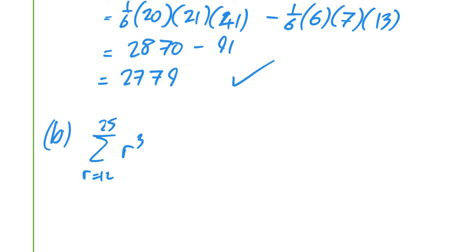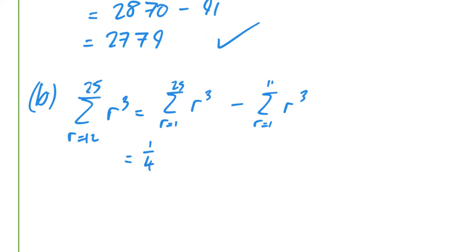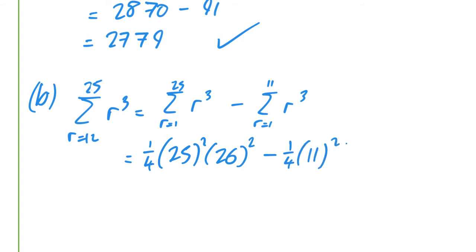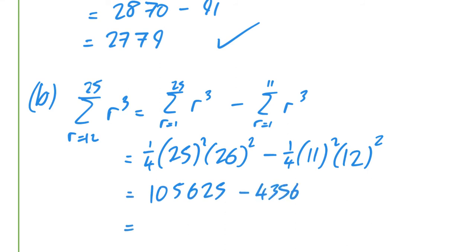The standard result for r³ is (1/4)·n²(n+1)². Putting in n=25 gives (1/4)·25²·26², and n=11 gives (1/4)·11²·12². That's 105625 minus 4356, which works out to 101,269.